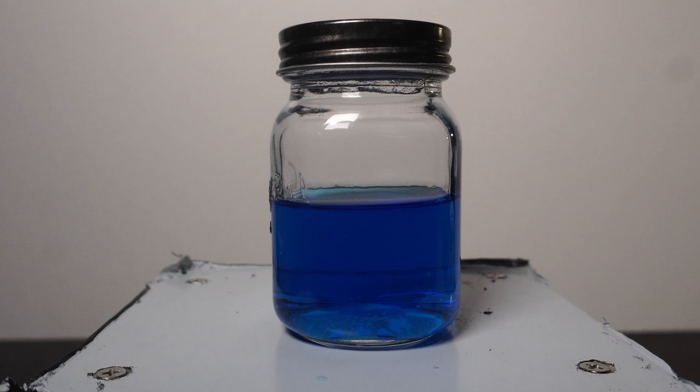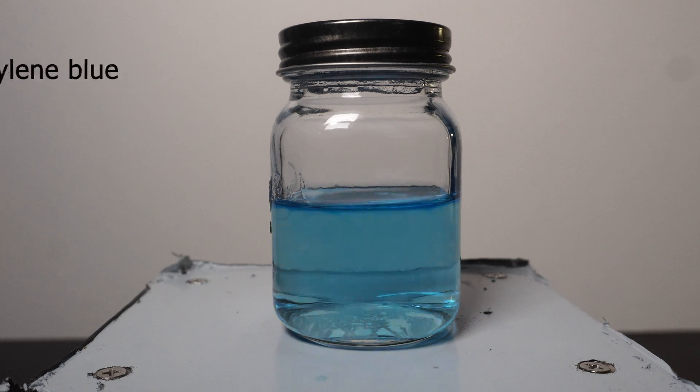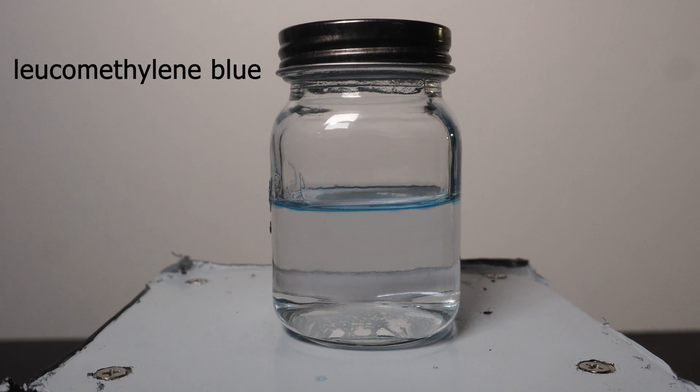Methylene blue, as we have seen in this project, has two forms. The oxidized form of methylene blue, which is obviously blue, but when we reduce it down to its colorless form, we can actually call it leukomethylene blue.